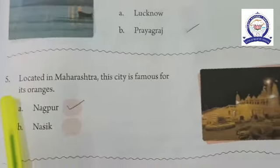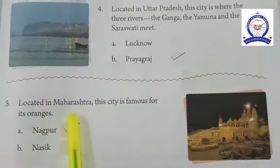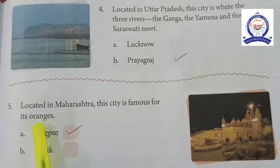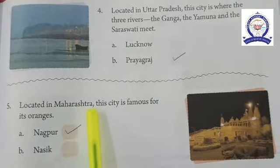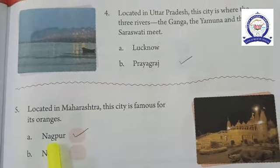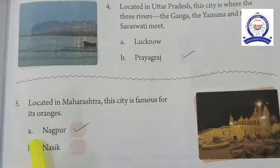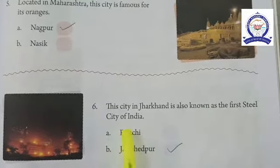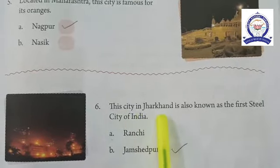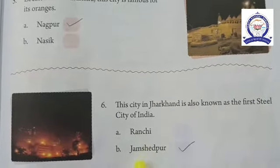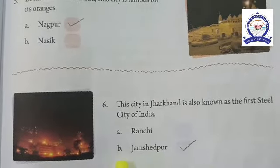Number five: located in Maharashtra, this city is famous for its oranges — the answer is Nagpur. Number six: this city in Jharkhand is also known as the first steel city of India — the answer is option B, Jamshedpur.